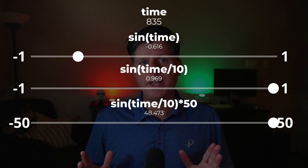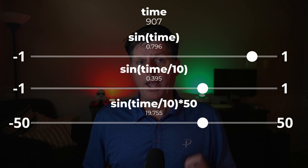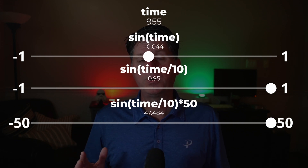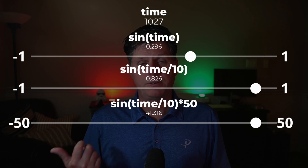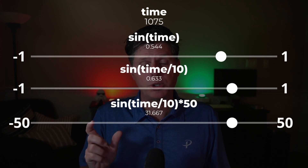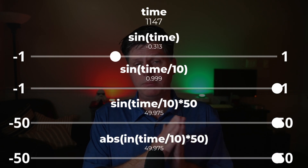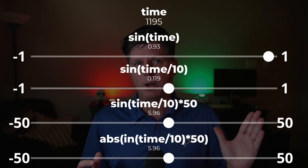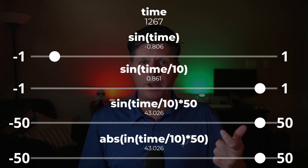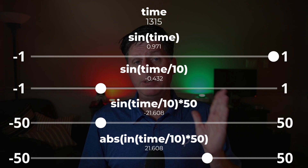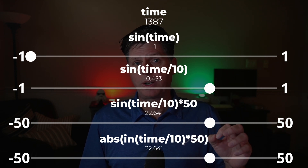If we want to control the range, all we need to do is take that negative one to one number and multiply it by something. Let's say we want this animation to go from negative 50 to 50 — all you have to do is take that equation and multiply it by 50. And if we only want it to go from zero to 50 with no negative numbers, we're going to throw the abs function, which is for absolute value. What that does is it basically keeps the number positive — if it goes negative, it's going to turn it back to positive.